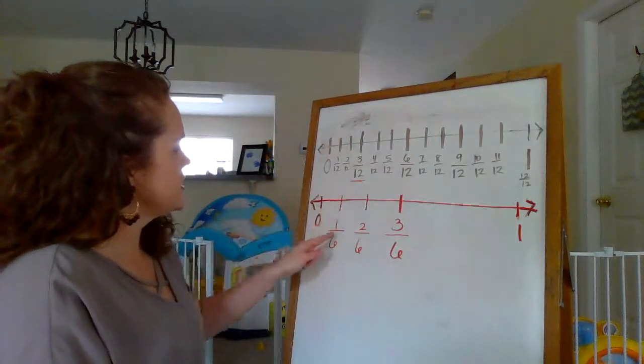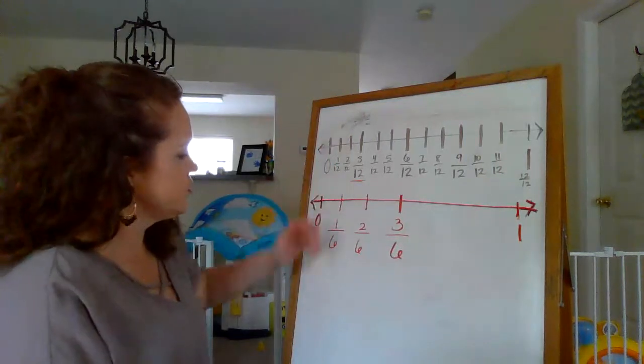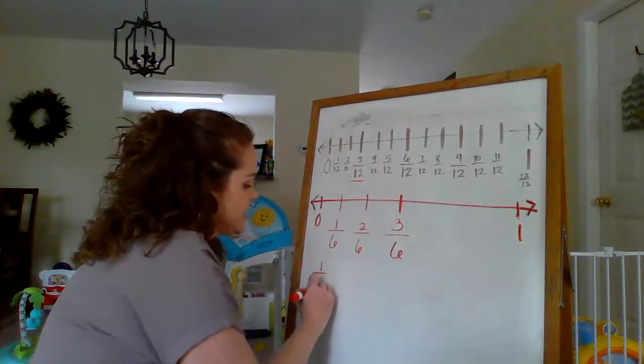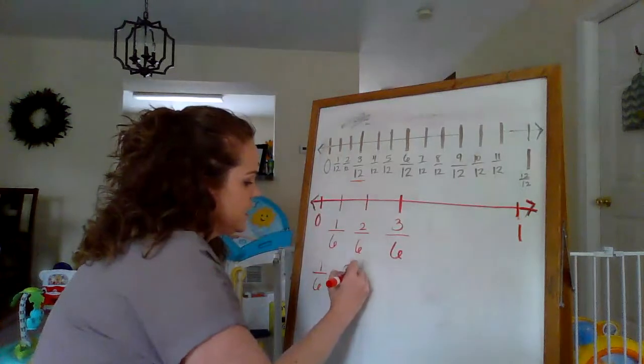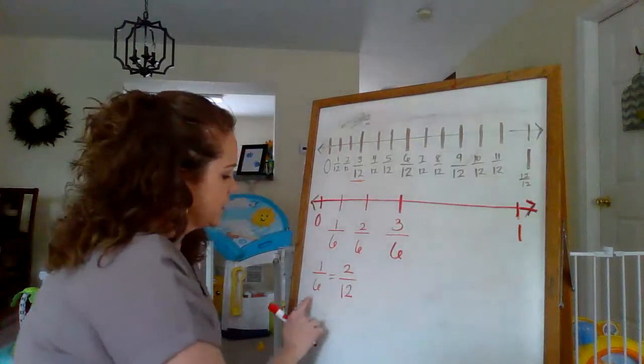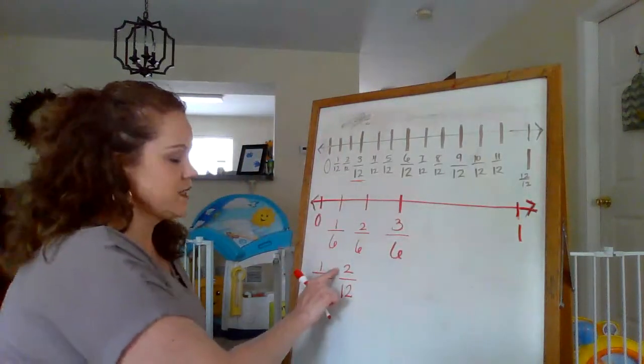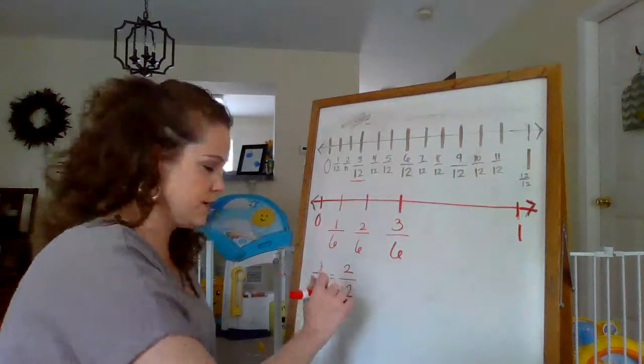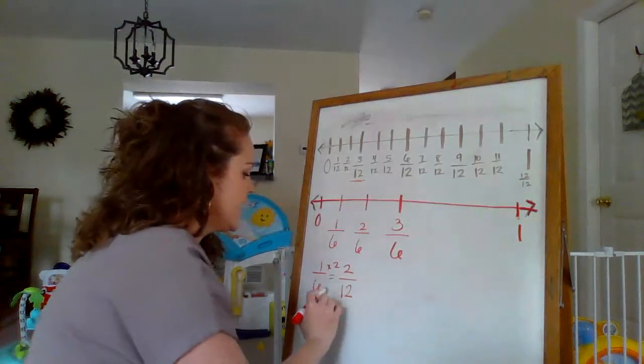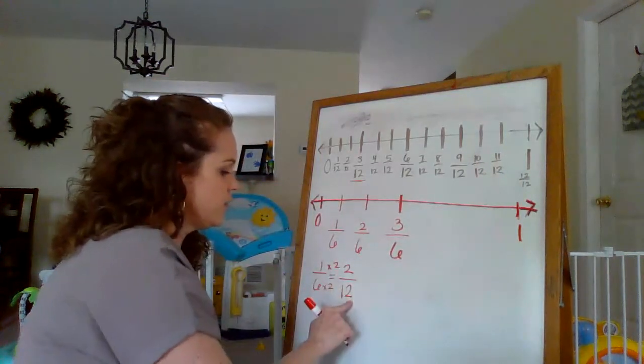Okay. So 1 sixth, I'm saying, I think it lines up with 2 twelfths. Let's see if that works. Is 1 sixth equivalent to 2 twelfths? Well, 1 times what is 2? 1 times 2 is 2. Yay. So is 6 times 2, 12? It is.